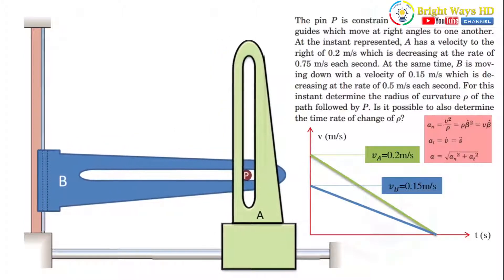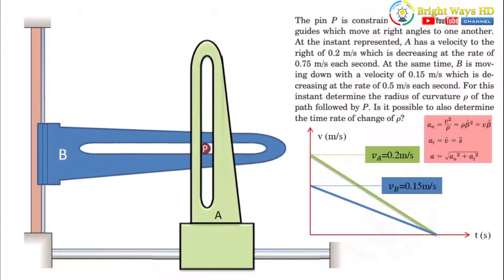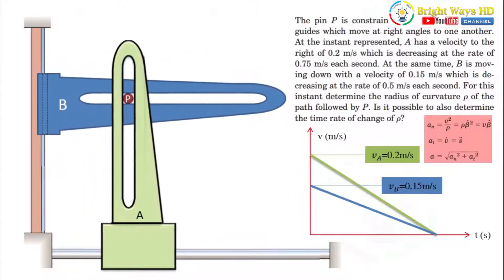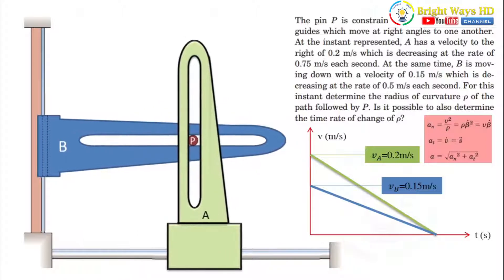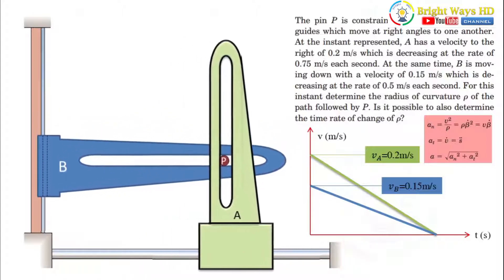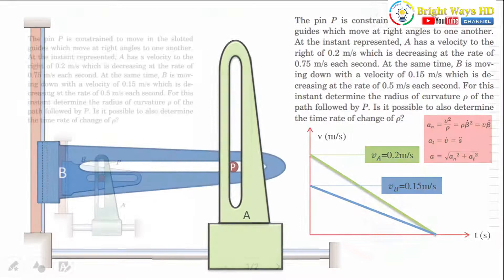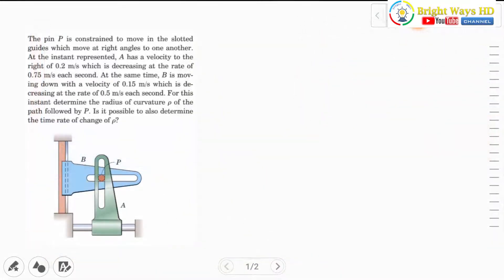The second part asks whether it is possible to determine the time rate of change of radius of curvature ρ̇. Now let's write the given parameters. Velocity in the x-direction is 0.2 m/s, and velocity in the y-direction is −0.15 m/s.